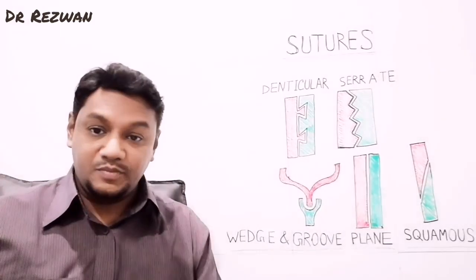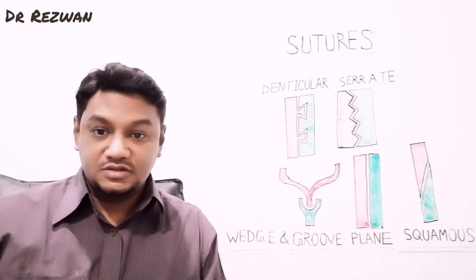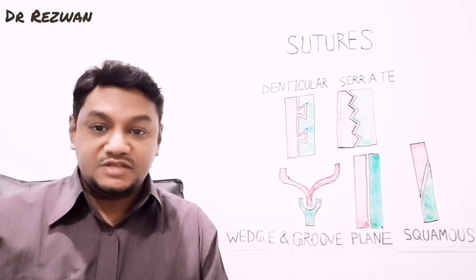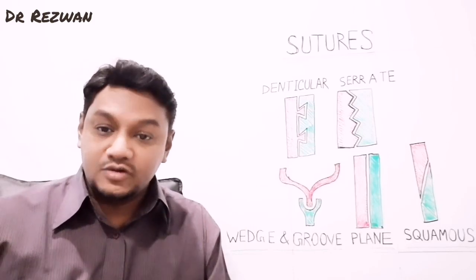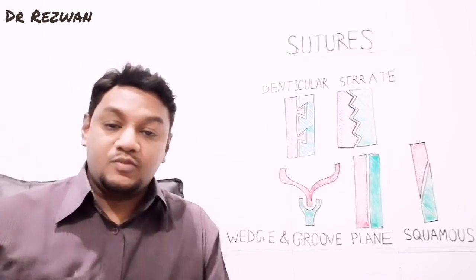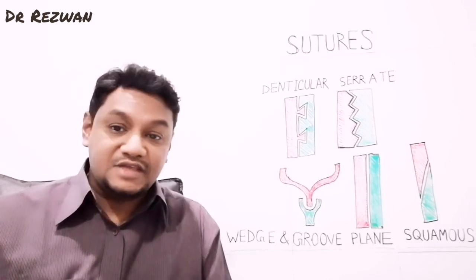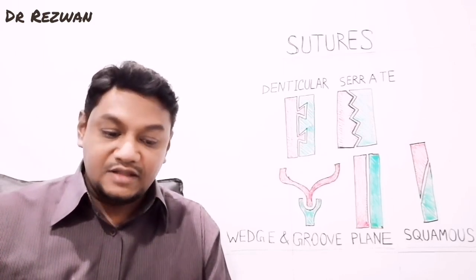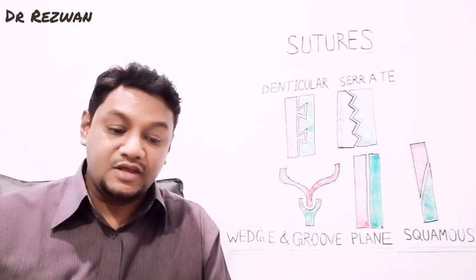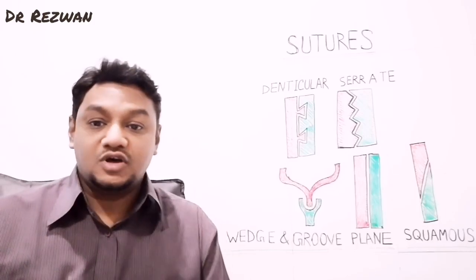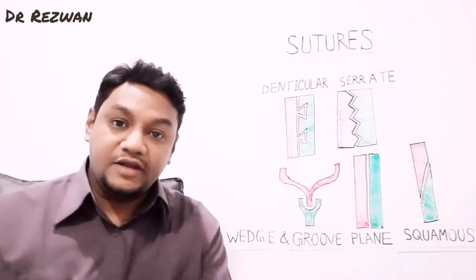The last type is the ridge and groove type of sutural joint. One surface is ridge-like and the other provides a groove, so the ridge is inserted into the groove. This type is not commonly found in the adult skull, but it has a single example: the rostrum of the sphenoid bone and the upper margin of the vomer. The vomer provides the groove and the rostrum of the sphenoid provides the ridge, forming the ridge and groove type of sutural joint.